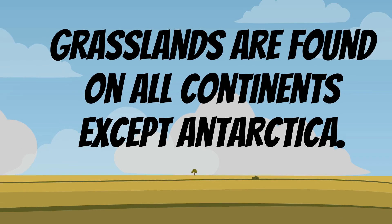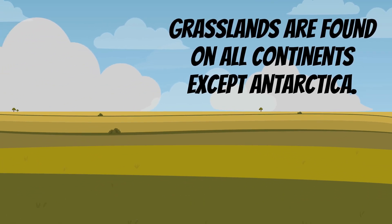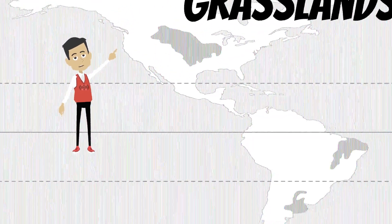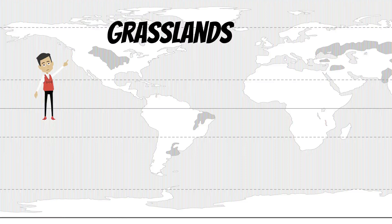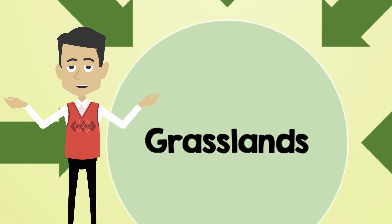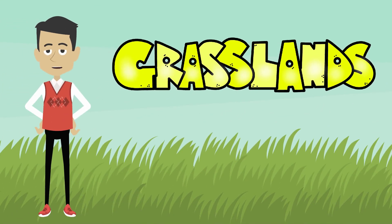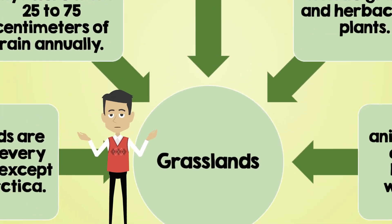Grasslands are found on every continent, except for Antarctica. In the grasslands, there are anywhere from 25 to 75 centimeters of rain annually. The climate in the grasslands includes mild temperatures and is sub-humid.